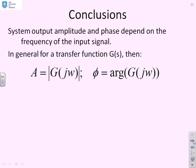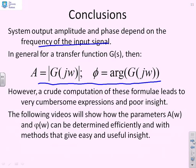Some conclusions: the system output amplitude and phase depend on the frequency of the input signal. These formulas can be used to determine gain and phase. However, crude computation of these formulas leads to very cumbersome expressions and poor insight, so we want to find alternative ways of calculating A(ω) and φ(ω) which are more efficient and give better insight.